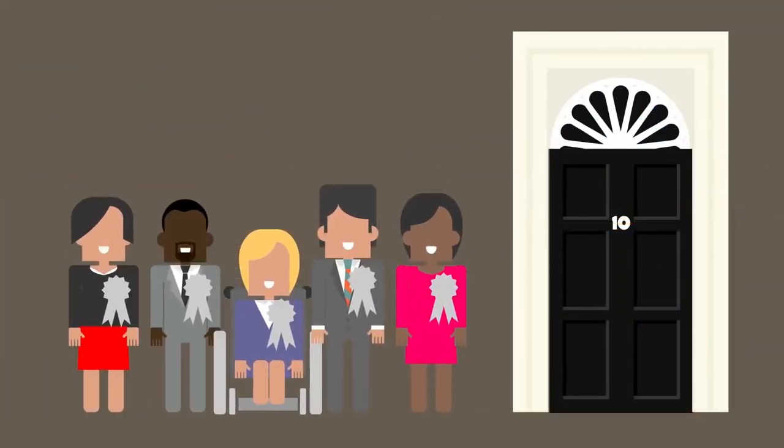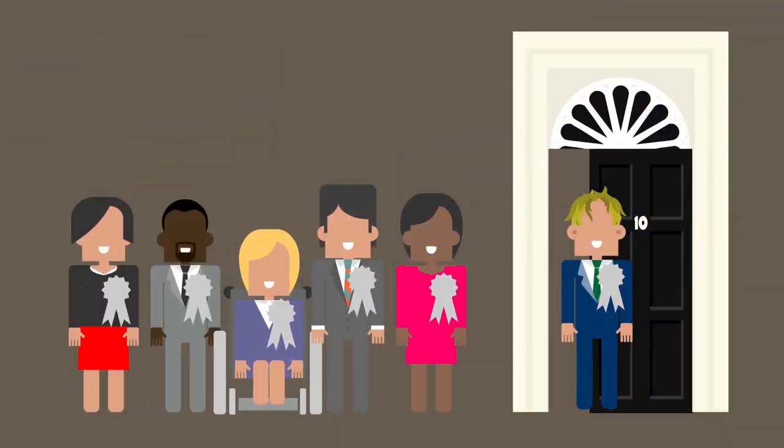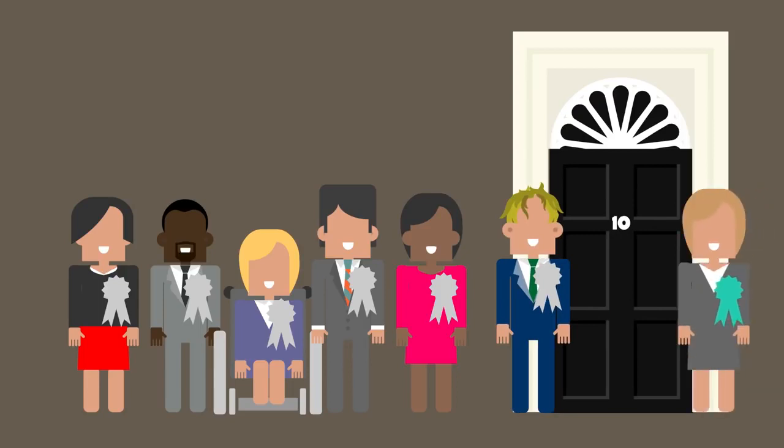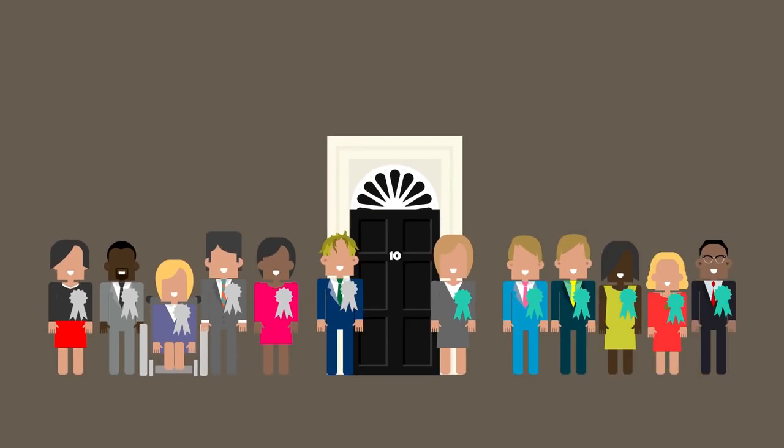The party with the most MPs elected forms the government, and their leader becomes Prime Minister. And if there's a hung parliament, where there's no clear winner, then a minority government or a coalition government may be created, or a fresh election held.